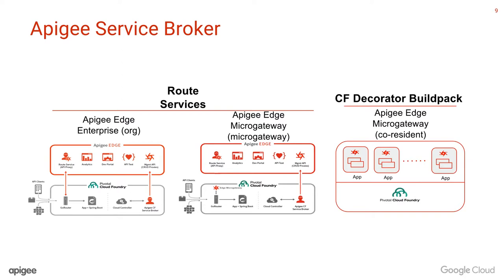But still, it's some network hops between the Go router, micro gateway, Go router, and your application, and back out to the customer. How the decorator build pack works is that we actually launch this within the application itself. As mentioned earlier, decorator build packs basically add on extra functionality to your application container, and we took this idea and added micro gateway within the container itself.